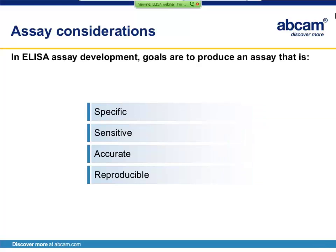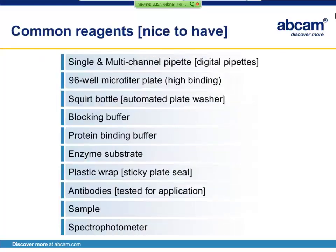Four important aspects to keep in mind when developing an ELISA assay are to ensure the assay is specific, sensitive, accurate, and reproducible. This slide shows some of the key materials needed for making your own ELISA assay. In brackets, I've noted equipment that, while not absolutely required, will certainly make running ELISA assays much more efficient. Single and multi-channel pipetters are required, but it is certainly nice to have digital repeat pipetters available for doing more than one or two plates at a time.